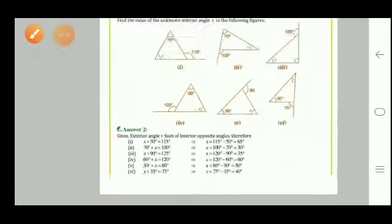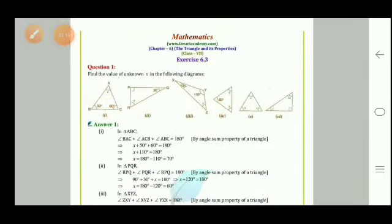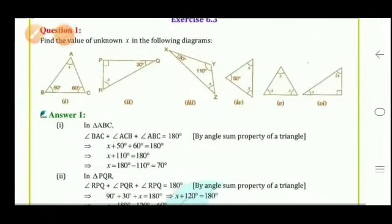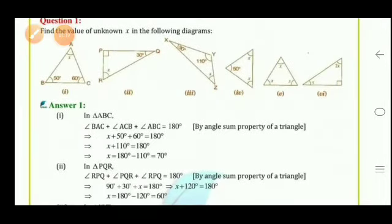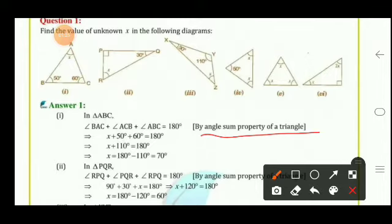Now Exercise 6.3: find the value of unknown x using the angle sum property of a triangle — the sum of three angles equals 180°. Part 1 — angles are x, 50°, and 60°. So x + 50 + 60 = 180°, giving x + 110 = 180°, therefore x = 70°.